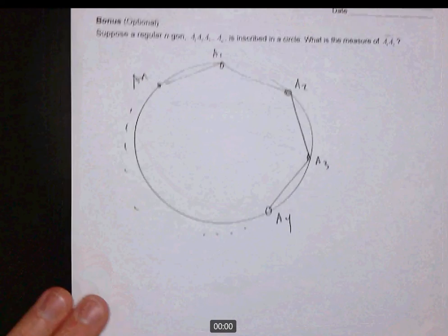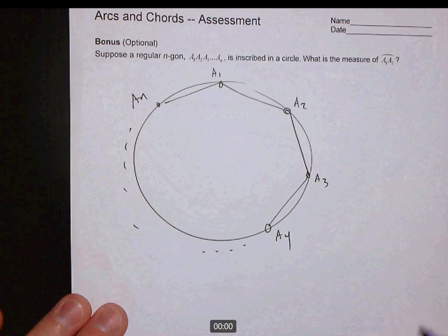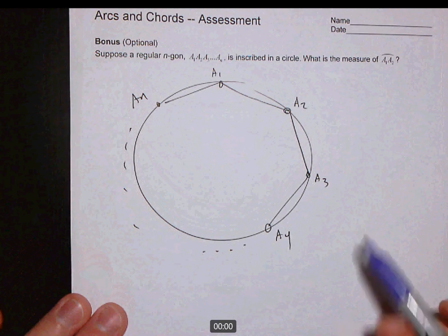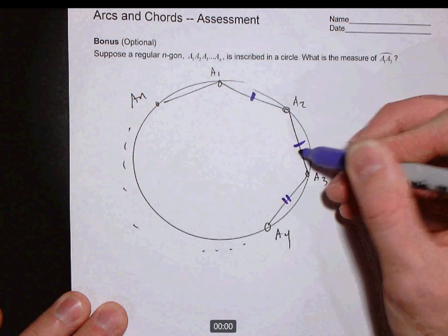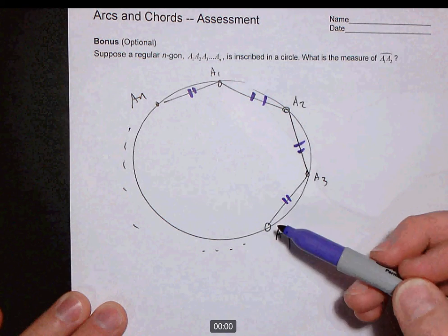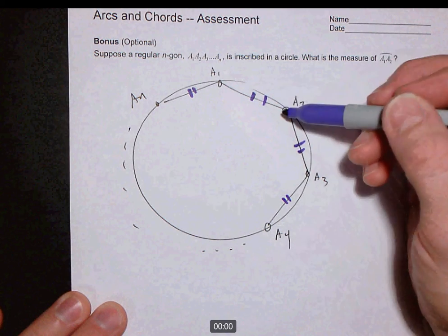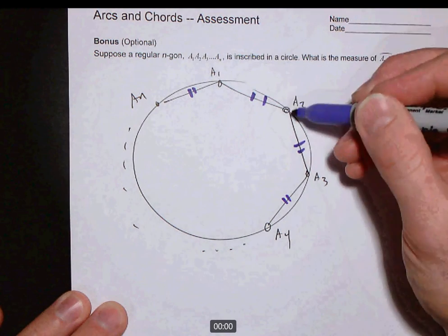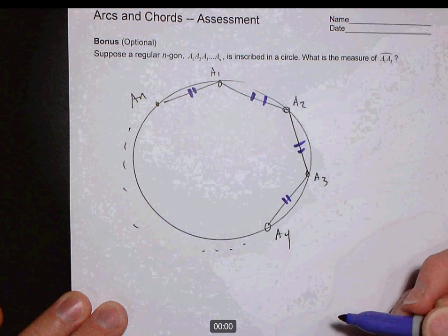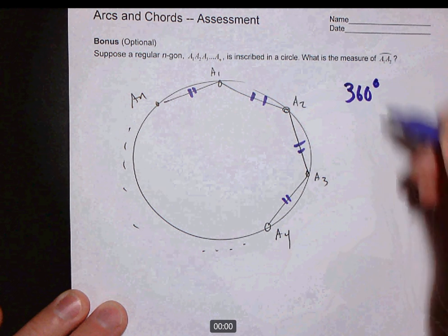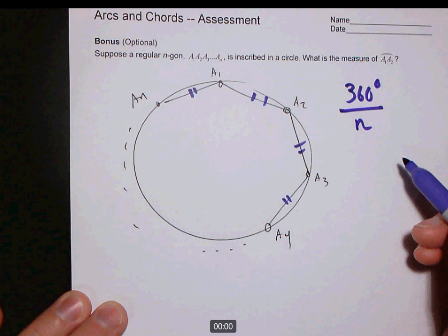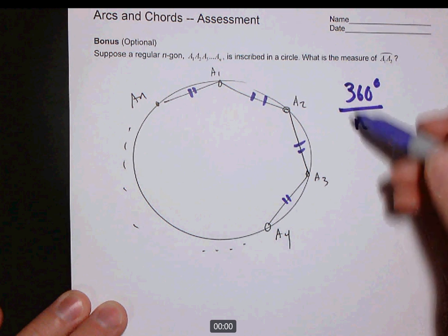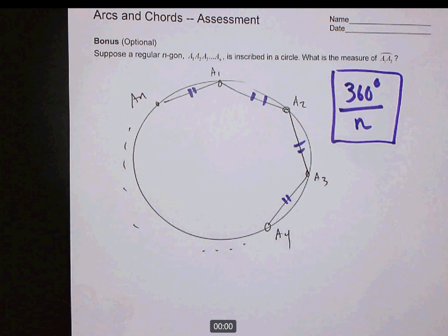Lastly, the bonus. People had good answers for this, but it's actually really easy if you think about it in the right way. A regular n-gon inscribed in a circle is made up of a bunch of congruent chords. All the sides are congruent, and in a circle, congruent chords determine congruent arcs, so all of the arcs are congruent. The entire circle is 360 degrees. There are n arcs determined by the n congruent chords, and so each of them has measure 360 degrees over n.